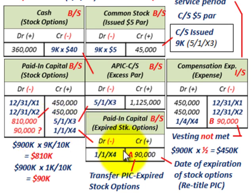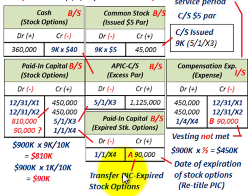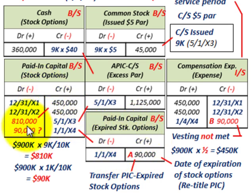In Case A, where the stock options expired — the executive chose not to exercise before the 1/1/x4 deadline — we take the $90,000 debit to paid-in capital for stock options and simply move it to a new equity account titled 'paid-in capital — expired stock options,' crediting that account for $90,000. We're just moving one equity account to another on the balance sheet.